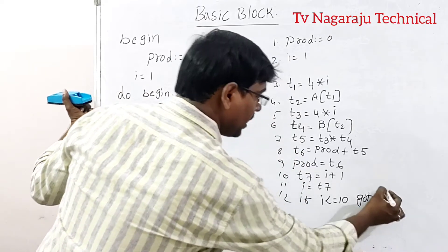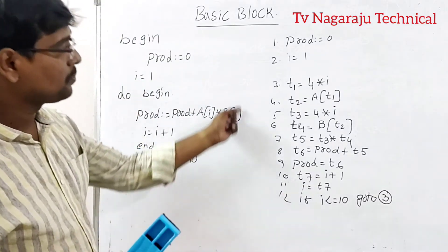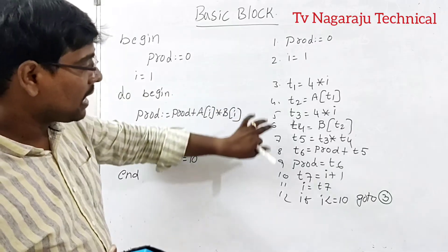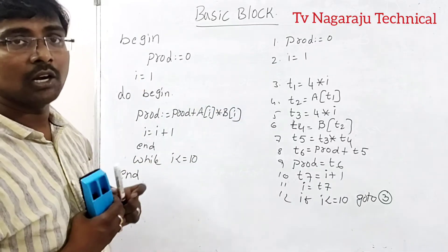Go to statement number 3. That is, this process is repeated. Clear? This is the 3 address code for the dot product.